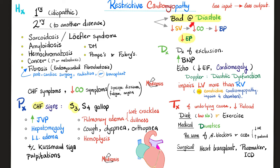This heart is bad at diastole — less input, less cardiac output. How can we diagnose restrictive cardiomyopathy? It is a diagnosis of exclusion. We need history and physical exam. BNP is usually elevated. On echocardiography, ejection fraction is low because less input means less output.